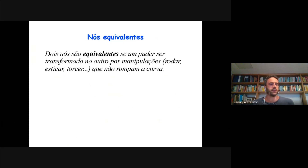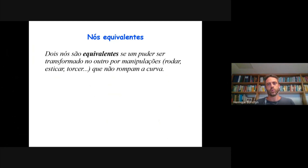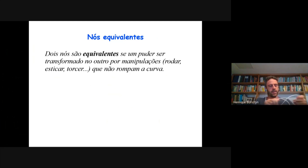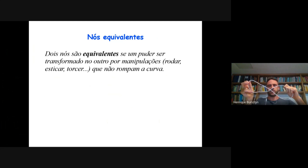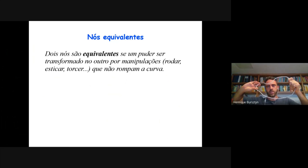Existe uma noção de equivalência entre nós, que é o que determina quando que nós que aparentemente são diferentes de fato são os mesmos. A gente vai dizer que dois nós são equivalentes se dois diagramas de nós puderem ser transformados um no outro através de manipulações, como rodar ou esticar essa cordinha do desenho, torcer, mas sem nunca romper, sem nunca partir a corda. Por exemplo, se você tem o nó trivial, embora ele não pareça o nó trivial, se você simplesmente fizer essa manipulação sem cortar a corda, você tem o trivial — eles são tidos como o mesmo nó.